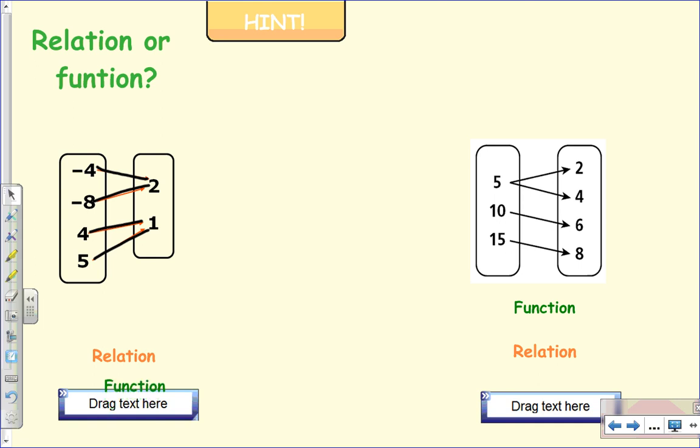Whoops, I wonder how come I didn't click in. Huh, that's a function. Now, here, does every input match with exactly one? Aha! Check this out. Five matches with two, but also five matches with four. So the input does not have exactly one output. So this would be a relation. That's not working. It's a relation. Okay.